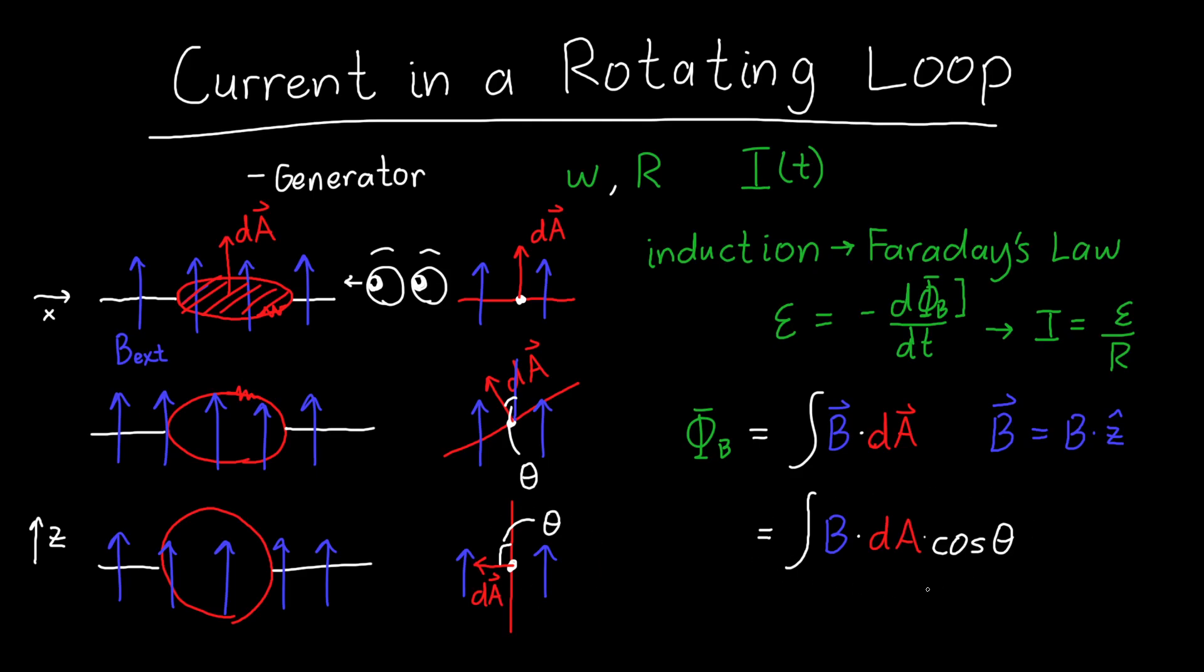So we need to take this integral. Now fortunately, because we're integrating over this area, over the surface, theta doesn't change. So it doesn't matter where our area vector is. So dA is always pointing in the same direction relative to the magnetic field. So cosine of theta is a constant.